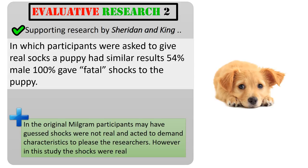We also have some supporting research by Sheridan and King. A criticism of Milgram is that participants may have worked out the shocks weren't real, so it felt okay to give high levels of shocks if they didn't feel the electricity was actually causing any damage. Sheridan and King, quite harshly, had participants give real electric shocks to a puppy in a setup very similar to Milgram. They found that 54% of participants would give what they thought was a fatal shock to the puppy — although the shocks were real, it wasn't an actual fatal shock.